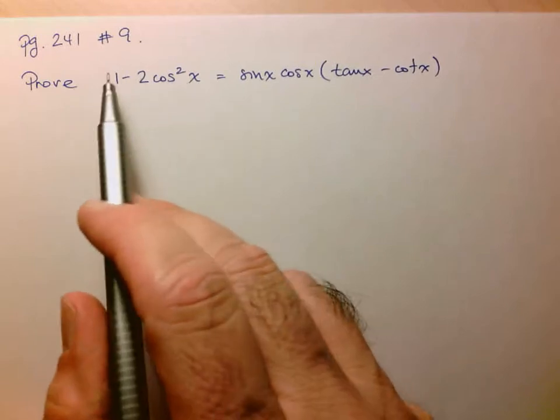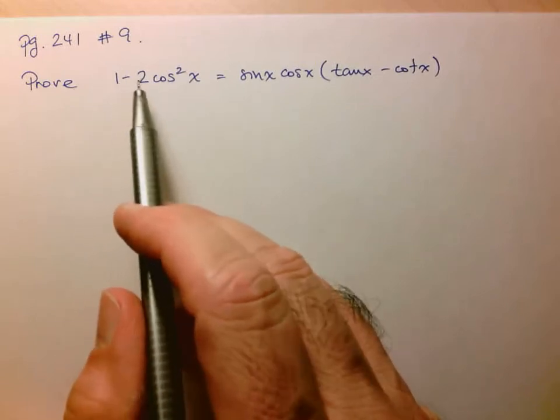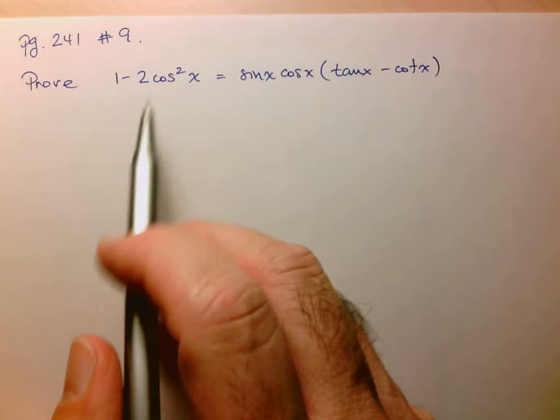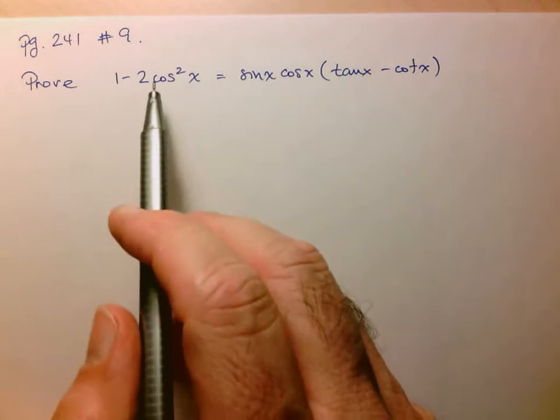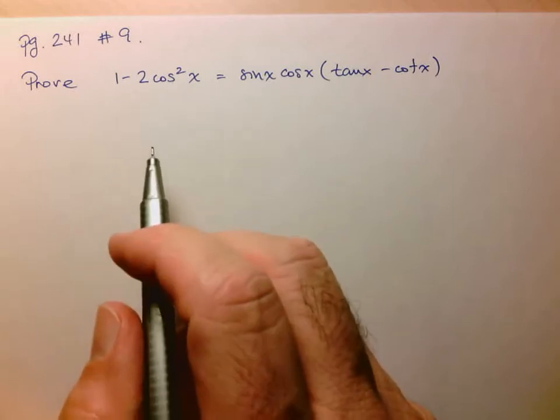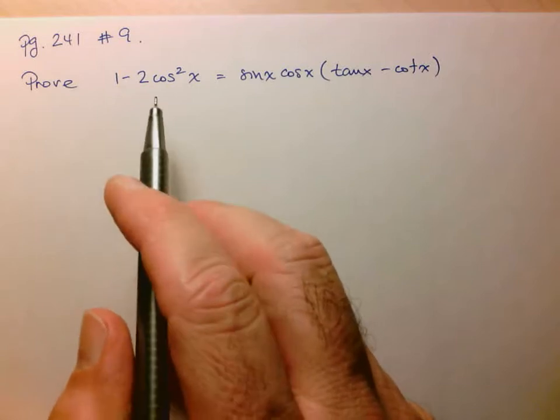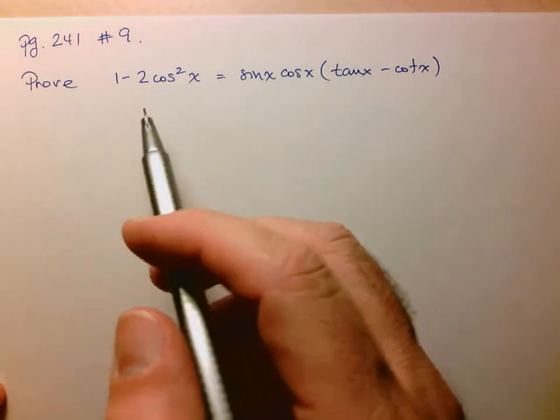One thing I do notice, though, about the left-hand side, is 1 minus 2 cos squared x looks very familiar. Hopefully you recognize it as looking a lot like one of the cosine double angle formulas. So that might come in handy later on.